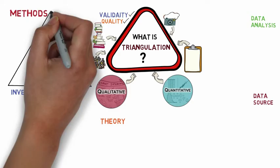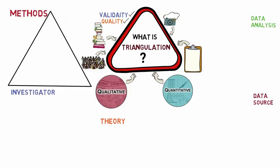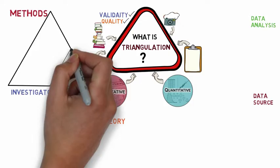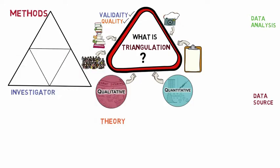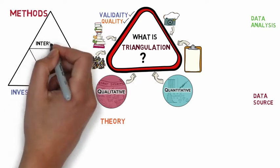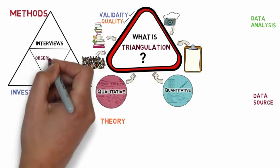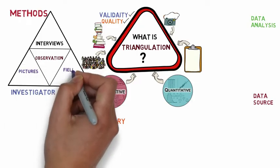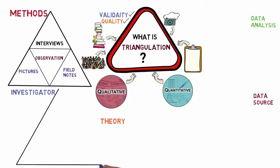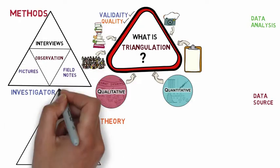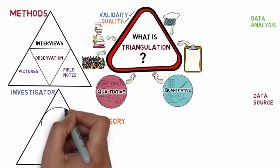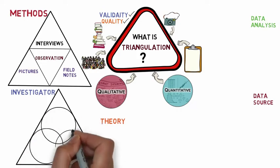Methods triangulation involves multiple methods of data collection about the same phenomenon. This means we may merge or use different data collection methods at the same time. This may include interviews, observation, pictures, and field notes.